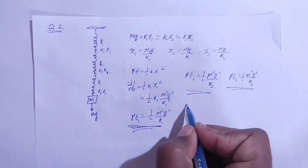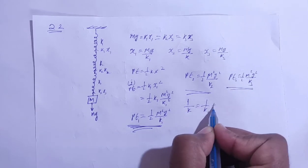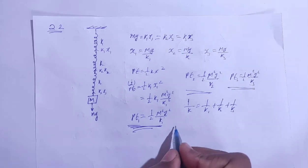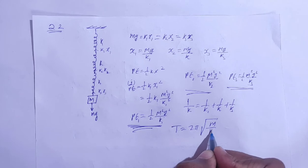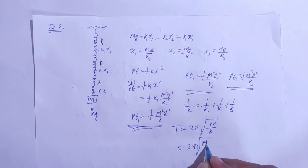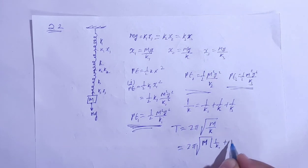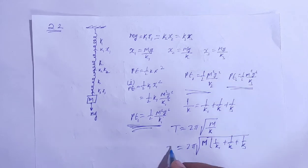If they are in series, we write 1 by k is equal to 1 by k1 plus 1 by k2 plus 1 by k3. This will give us the time period.